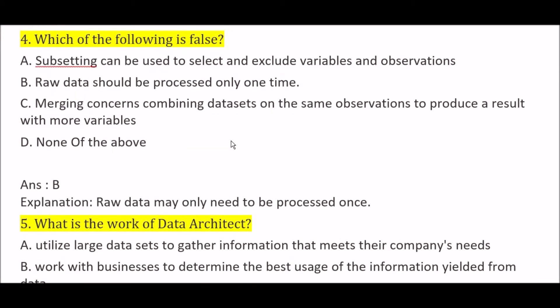Which of the following is false? Statement A: subsetting can be used to select and exclude variables and observations. Statement B: raw data should be processed only one time. Statement C: merging concerns combining data sets on the same observations to produce a result with more variables. Statement D: none of the above. The false statement is Option B — raw data may only need to be processed once, but that is not always the case.